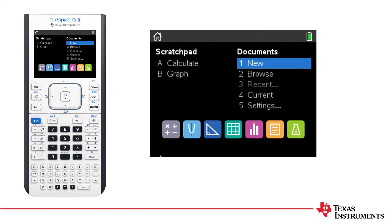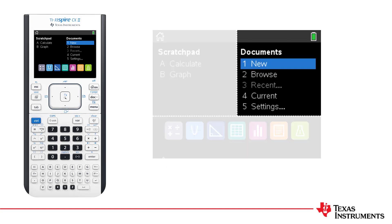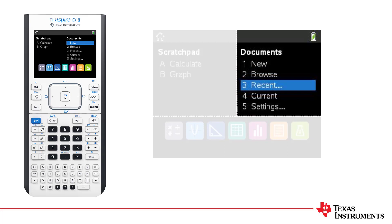Now for the home screen. It too is divided into three regions. On the right hand side, we see the document options. Which include things like launching a new document, browsing your files, access to a recent document, or jump to the current document or adjust settings.